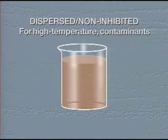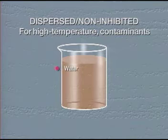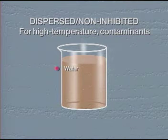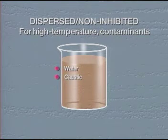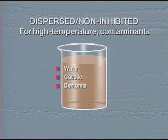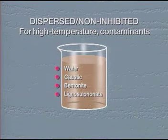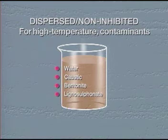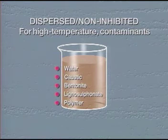A typical lignosulfonate mud must be fresh water, caustic soda to a pH of 10, 10 to 25 pounds per barrel bentonite, 5 to 10 pounds per barrel chrome lignosulfonate, and 1 quarter to 2 pounds per barrel starch or polymer.